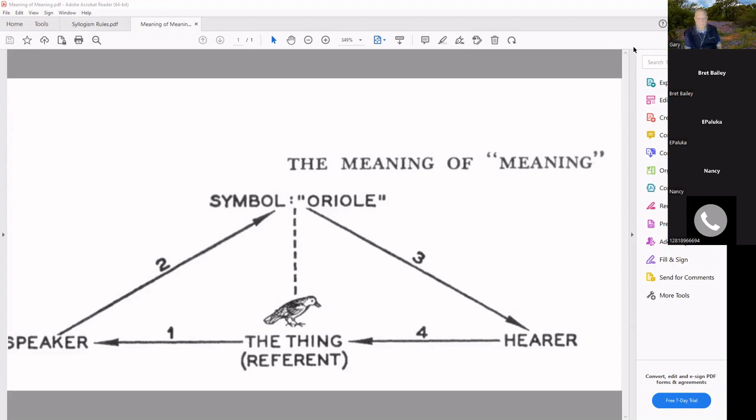If we look at Genesis the second chapter verse 19, it talks about Adam naming all the animals. Now what criteria he used for naming animals I don't know, but God paraded all the animals before him and he gave them a name as he saw fit.